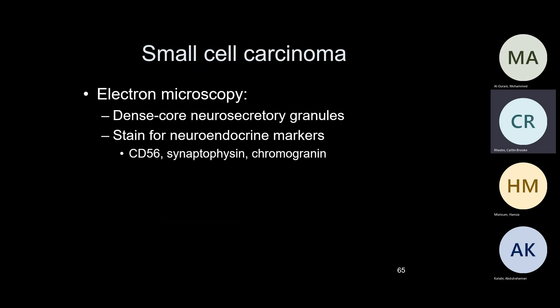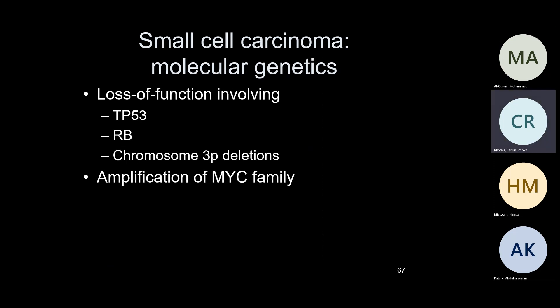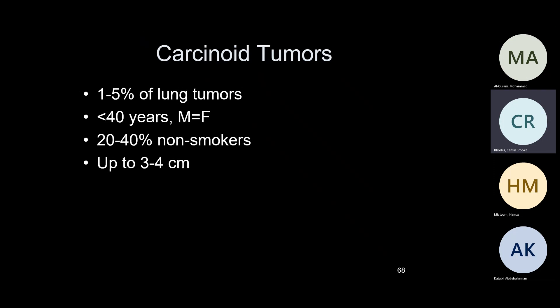In electron microscopy — we don't use EM much anymore, it's mainly used for viral studies and renal pathology — you see dense core neurosecretory granules. Small cell carcinoma stains positive for neuroendocrine markers: the good neuroendocrine markers are CD56, synaptophysin, and chromogranin. There are mutations involving TP53 genes, RB genes, chromosome 3p deletions, and amplification of NMY family genes. Patient has small cell carcinoma — non-small cell versus small cell — you'll hear this term all the time in clinical rounds.